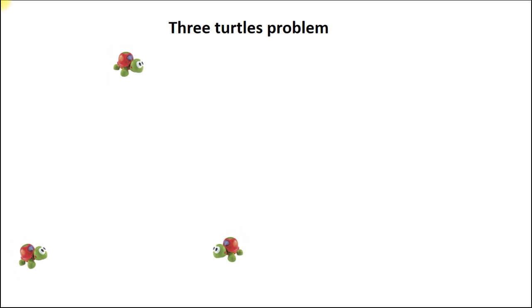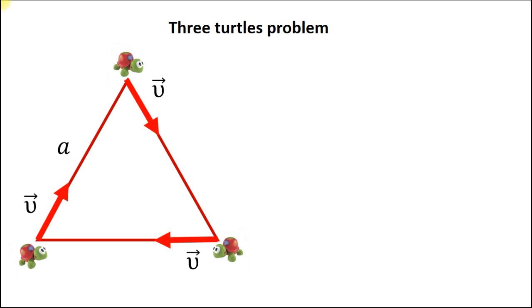Imagine that you have three turtles sitting at the vertices of an equilateral triangle with a side length of a, and all of them start moving with the same velocity v. The first turtle always directs its motion to the second turtle, the second turtle to the third turtle, and the third turtle to the first one again.